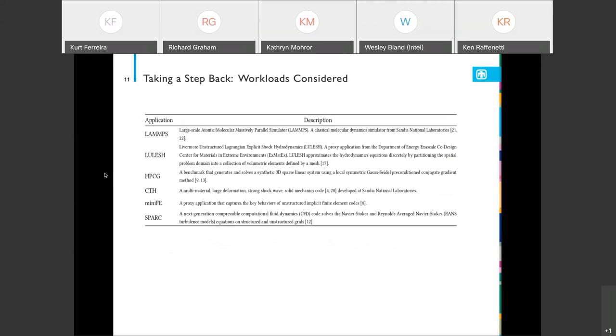There are a number of workloads that we considered: LAMPS, which is a molecular dynamics code; LULESH, which is a hydrodynamics code; there's a number of proxy apps like HPCG, which is a conjugate gradient; I already showed you some data for CTH, which is a shock physics code here at Sandia; another proxy app, MiniFE, which is an implicit finite element analysis code; and lastly, Sparc, which is another Sandia code, a compressible fluid dynamics code. For the purpose of this presentation, I'm only going to be discussing a subset: LAMPS, CTH, MiniFE, and Sparc. You'll see there's general trends for all of these apps. I refer you to take a look at the paper for more details.